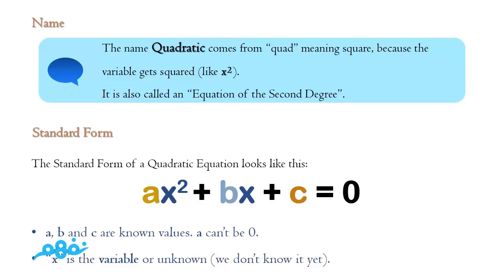Here is the standard form of quadratic equations: ax² plus bx plus c equals 0, where a, b, and c are known values. These values can be anything, except a — a must not be zero. Because when a equals zero, there is no quadratic function anymore; it becomes a linear one. Multiplying a, which equals zero, to the x² part makes the leading coefficient vanish.